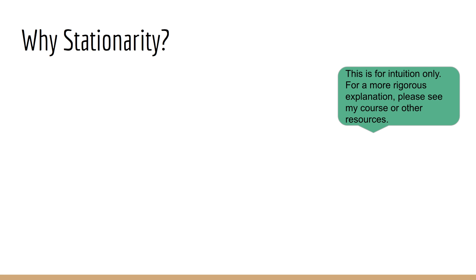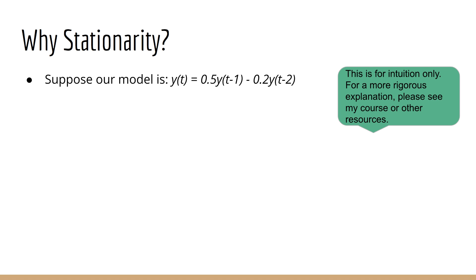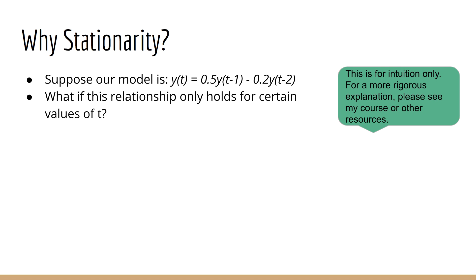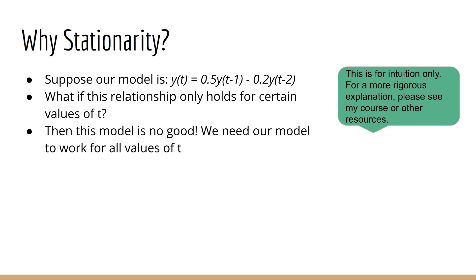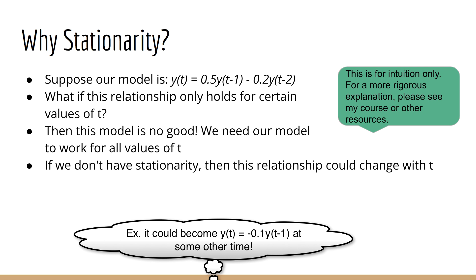Why do we care about stationarity when modeling time series? Suppose we have a simple linear autoregression: y(t) = 0.5·y(t−1) − 0.2·y(t−2). What makes this a good model? It would be good if it helps us make accurate predictions. But suppose it is only accurate for certain values of t — in that case the model is no good, because it cannot be used for other values of t. That is why we require stationarity. If the data is not stationary, this relationship could change with t, making the model obsolete for the time period we actually want to use it.